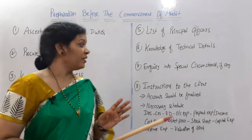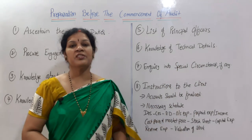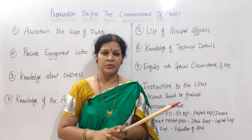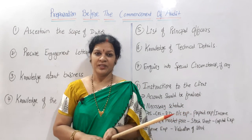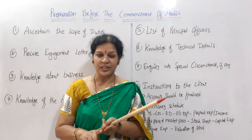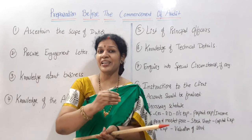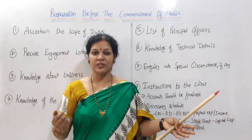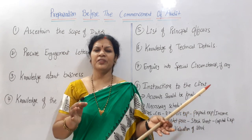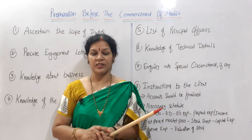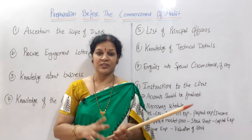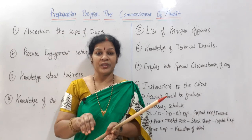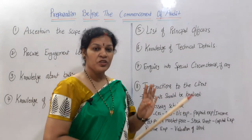The seventh step is enquiry into special circumstances, if any. For example, if this auditor is appointed in place of a previous auditor, he should get information from that previous auditor — advice, clarification, and insights from someone who has already done auditing work in the same company. If any such special circumstances exist, the auditor must proactively focus on them. No one will guide him; it is his minimum responsibility and duty to be thorough before commencing the audit work.